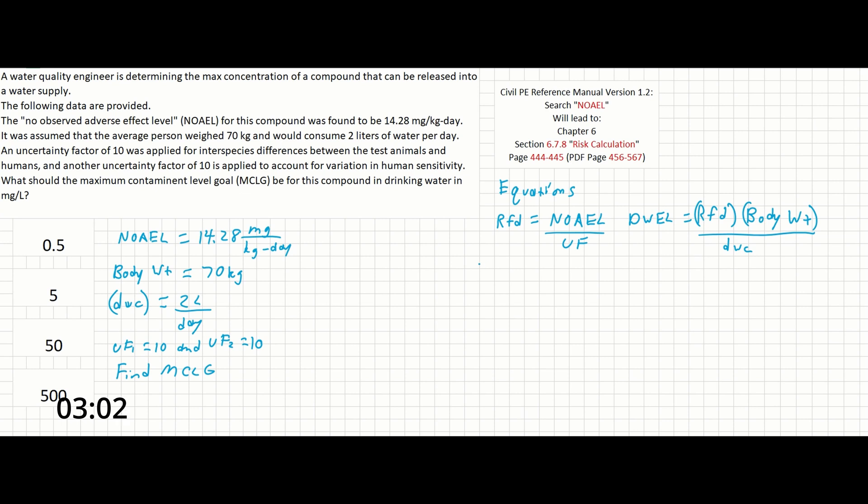So what does it take to solve this problem now that we have everything we need laid out? First, we need to realize that the MCLG we are asked to solve for is actually the term DWEL in one of our equations. Next, we need to recognize that while we aren't given the reference dose, we are given the terms that comprise this variable. So let's rewrite our equation to include those terms instead.